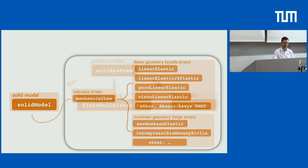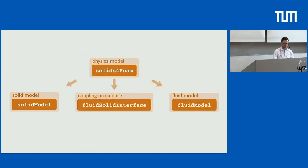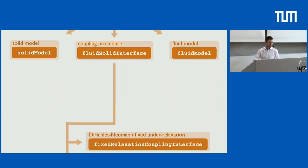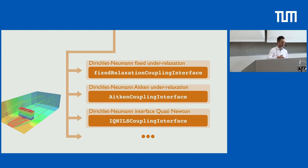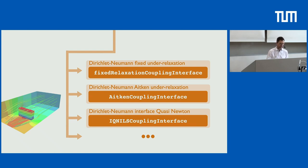The FSI interface implementation, which comes from Extend-Bazaar and Tuković, uses Aitken and IQN-ILS coupling plus fixed relaxation — Dirichlet-Neumann coupling accelerated methods similar to the way FSI is done in preCICE. The IQN-ILS implementation is actually based on De Groote's original one from his PhD.